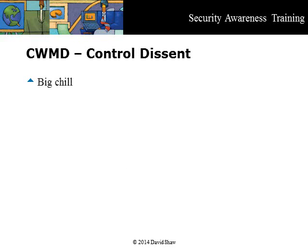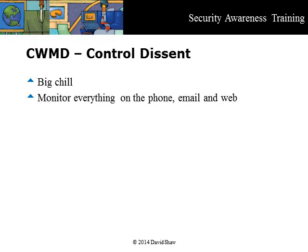As George Orwell predicted in his novel 1984, cyber weapons of mass destruction are also deployed to put a big chill on democratic dissent. We all have a private self. Every phone call you make to your spouse about a bad boss, every politically incorrect joke you send in an email, every purchase with a credit card, every web search about drugs of any kind, and the websites for abortion centers that you visit, are monitored and stored for future use.